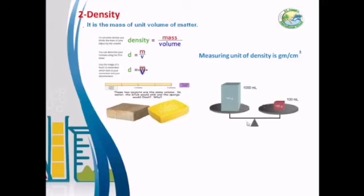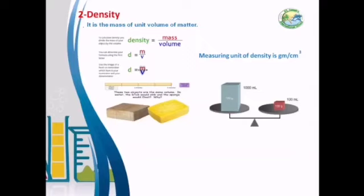We also have one box of 100 grams and another box of 100 grams. They have the same mass but different volumes — the blue one has a volume of 1000 mL and the red one has a volume of 100 mL. So equal masses of different substances have different volumes because they have different densities. Density equals mass divided by volume, so equal masses of different substances occupy a different part of space.